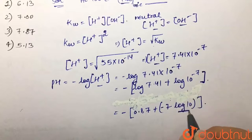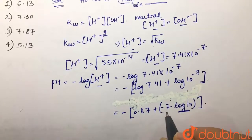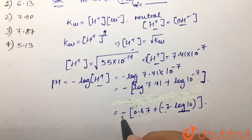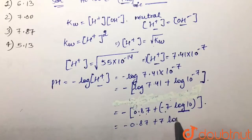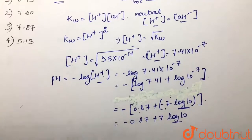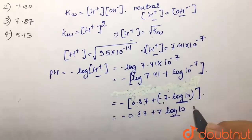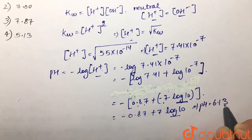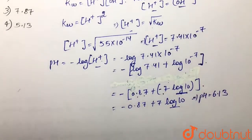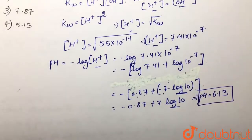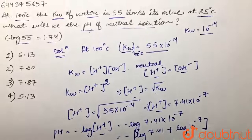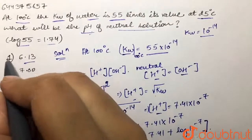Since log 10 equals 1, that term becomes minus 7. With the overall minus sign, we get minus 0.87 plus 7, giving a pH value of 6.13. So our pH value comes out to be 6.13, which corresponds to option number 1.